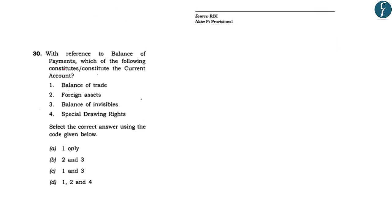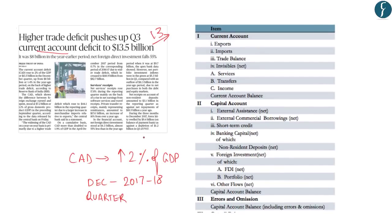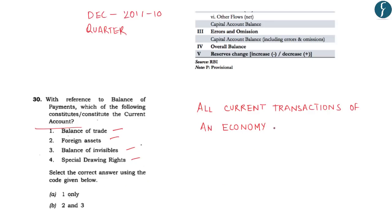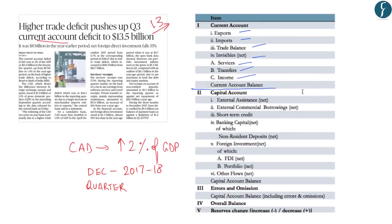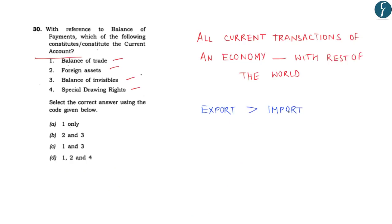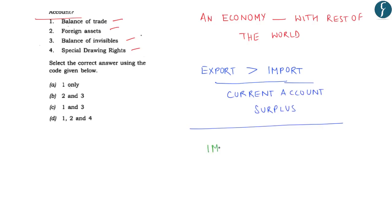The 2014 question was: 'With reference to balance of payments, which of the following constitutes the current account?' Options given were balance of trade, foreign assets, balance of invisibles, and special drawing rights. This current account is an account consisting of all current transactions of an economy with the rest of the world. It mainly includes merchandise exports and imports, trade balances, invisibles, services, transfers and income. When exports are greater than imports, it amounts to current account surplus; when imports are greater than exports, it amounts to current account deficit.